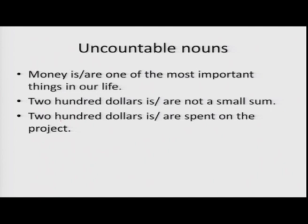We have looked at some cases of uncountable nouns. For example, money is uncountable, so 'money is.' But if you say 'two hundred dollars,' there are two possibilities. 'Two hundred dollars is not a small sum' — here you are treating it as one entity, so it becomes 'is.' But 'two hundred dollars are spent on the project' — here you are counting each dollar individually, so you use 'are.'